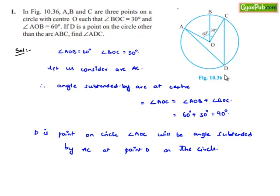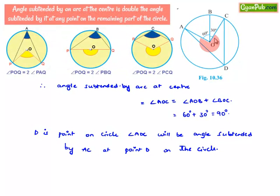We know that the angle subtended by the arc at the center is two times the angle subtended by the arc at any point.